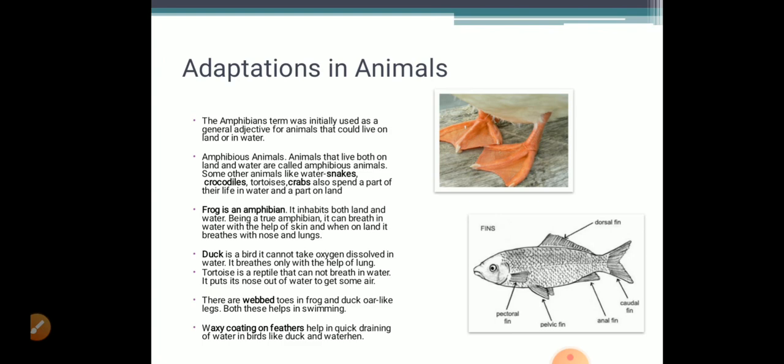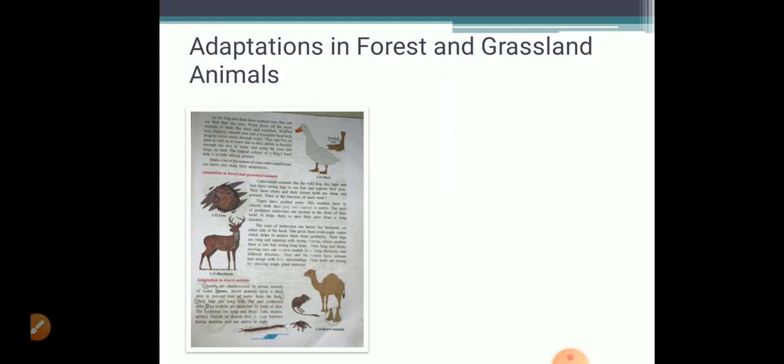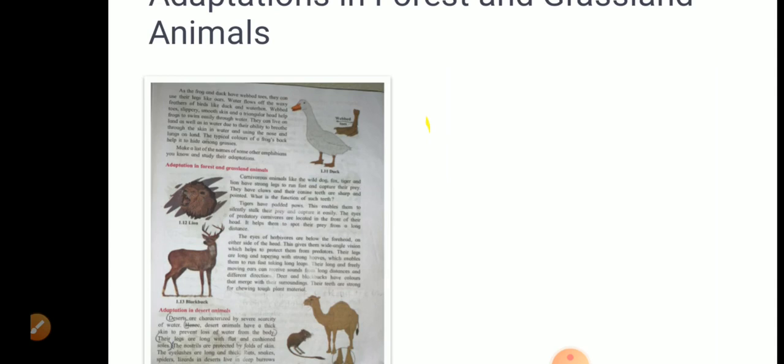Now, let us study how animals have adapted themselves in forest and grasslands. Carnivorous animals like the dogs, wild dog, fox, tiger and lions have strong legs to run fast and capture their prey.